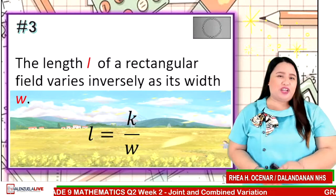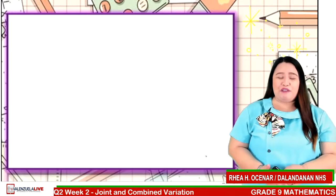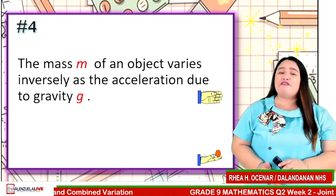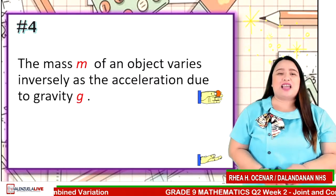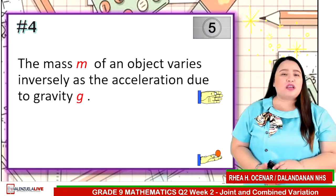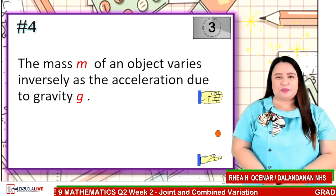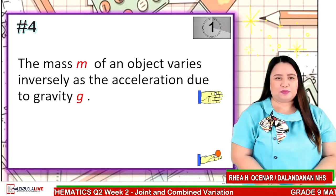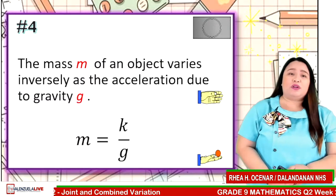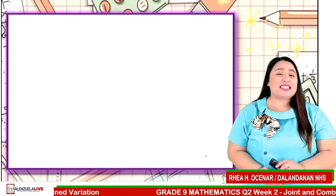If you got 3 correct answers, you are awesome. Let's continue on statement number 4. The mass M of an object varies inversely as the acceleration due to gravity G. 5 seconds to answer. The correct answer is M is equal to k over G.